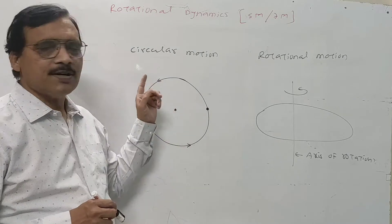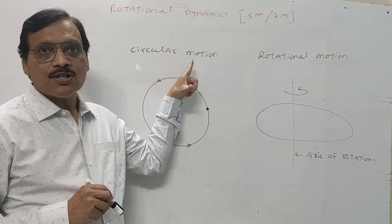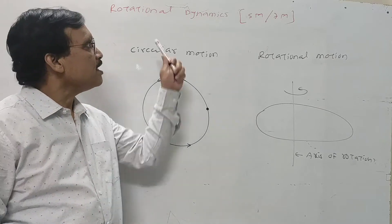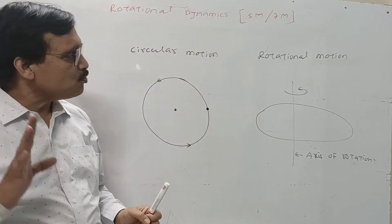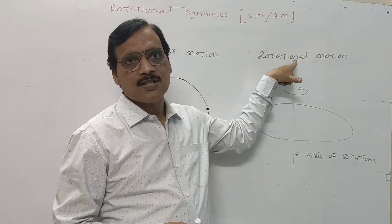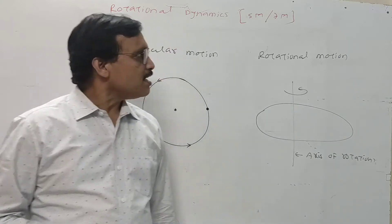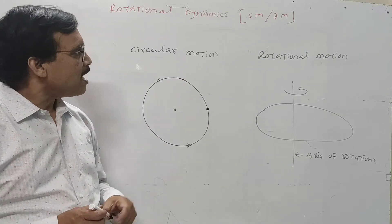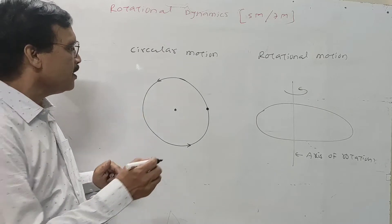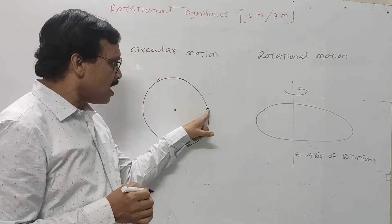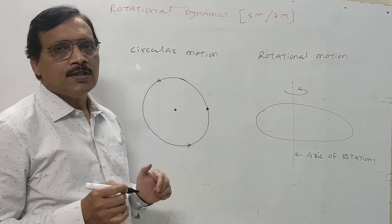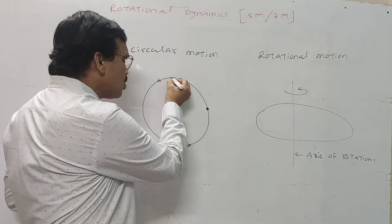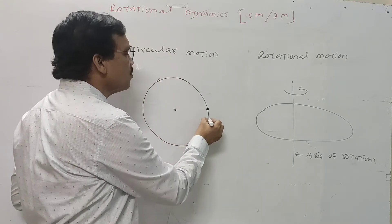In the 11th standard, we have circular motion in a plane, and in the 12th, rotational motion is separate. Circular motion is defined as the motion of a particle along the circumference of a circle.